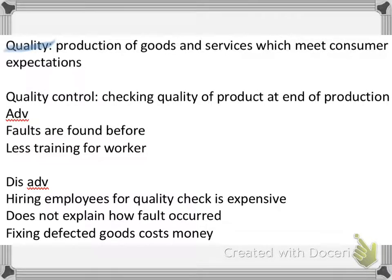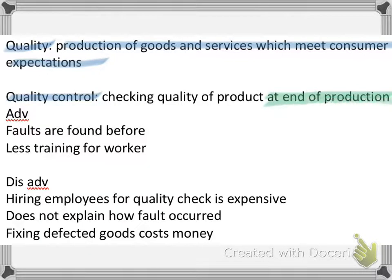Quality means producing goods and services that meet customer expectations. Quality control is one of the methods of achieving quality production. Quality control includes checking the quality of a product at the end of production — this is the main thing to remember: it happens at the end of production.